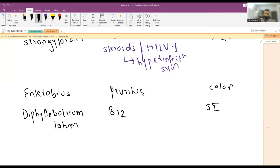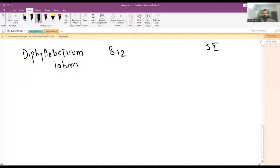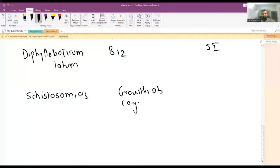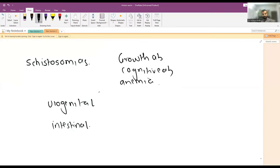Next are the schistosomiasis extra-intestinal features. Schistosomiasis themselves have growth abnormality, cognitive abnormality, and anemia. They are grossly divided into two types: one is urogenital and second is intestinal. Urogenital is Schistosoma haematobium, and intestinal is japonicum and mansoni.